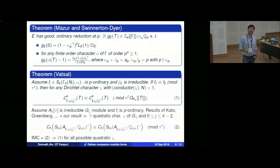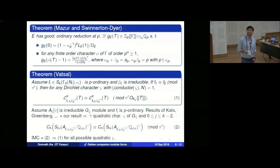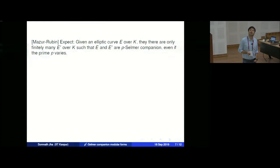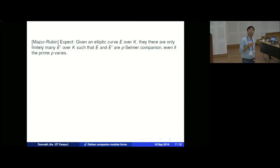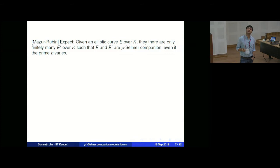There is an important difference between elliptic curves and modular forms regarding the Selmer companion phenomenon. For elliptic curves, Mazur-Rubin expect that given an elliptic curve E over K, there will be only finitely many E′ such that E and E′ are p-Selmer companions. In fact, they say that even if you vary p, given an elliptic curve, there will be only finitely many E′ congruent to E.